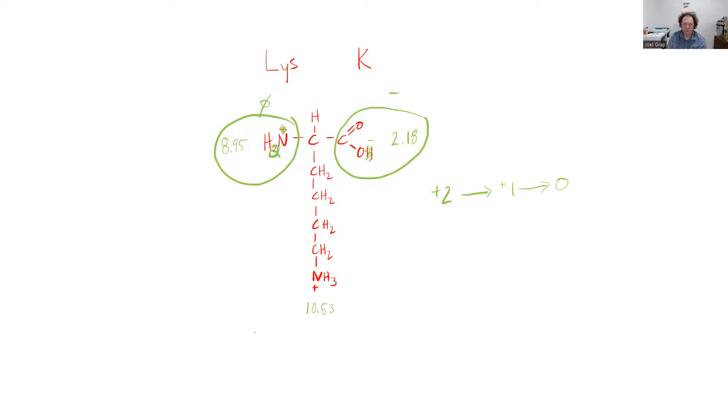The third and final group that's going to be deprotonated is your side chain. That side chain will be mostly deprotonated when your pH is above that pKa of 10.53.